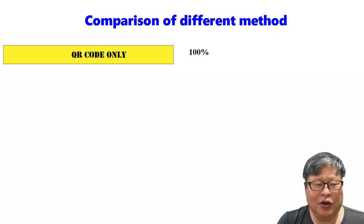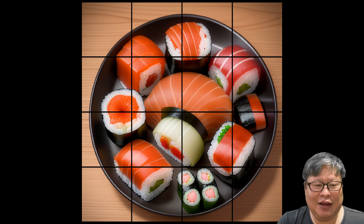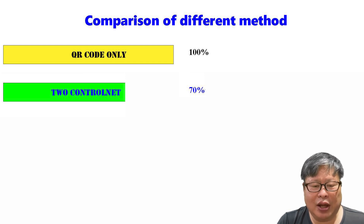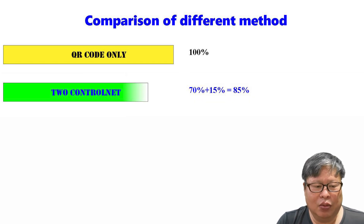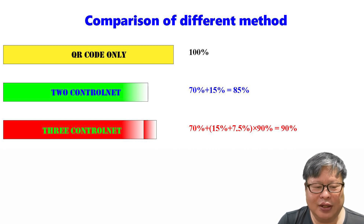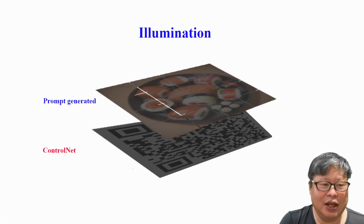The process unfolds as follows. First, with the prompt, Automatic1111 generates an image that is combined with the ControlNet Tile function, resulting in the image being divided into several small pieces. These pieces are mixed with the QR code image, contributing to approximately 70% success probability. With the second ControlNet process, the final success probability increases to about 85%. The introduction of three non-Tile ControlNet systems further enhances the process, providing additional success probability and bringing the final success rate to around 90%.